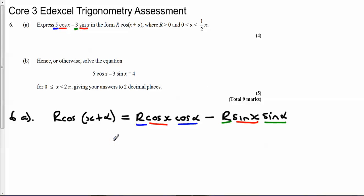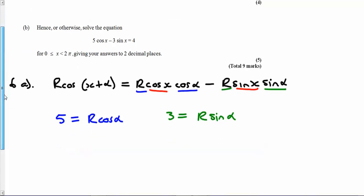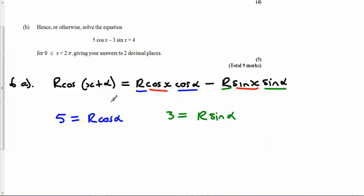So if that's going to be rewritten in that form, then 5 must be equal to R times cos alpha, and 3 must be equal to R times sin alpha. Now that allows us to do two things: it allows us to find both R and alpha.